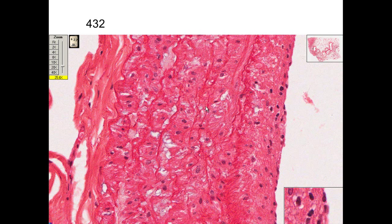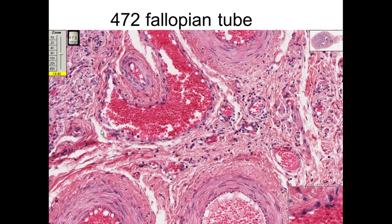In the lungs we again see elastic arteries where you can see the elastic fibers running through, with intima as endothelial cells, muscle in the media, and adventitia. In the fallopian tube we see muscular arteries with a very distinct internal elastic lamina, and the media and adventitia — as opposed to the adjacent vein, which has a thin wall of muscle and adventitia but still has endothelium.